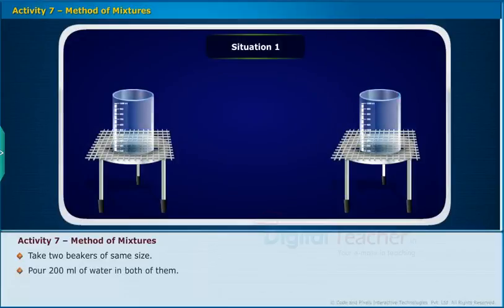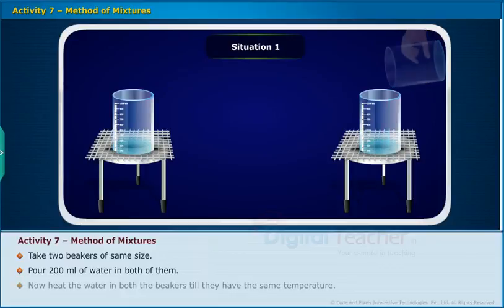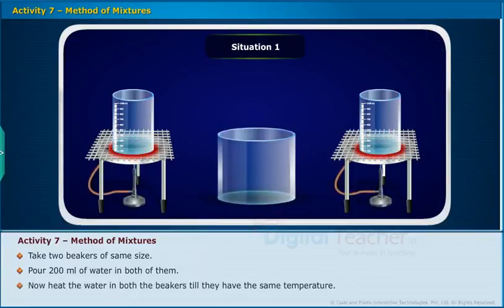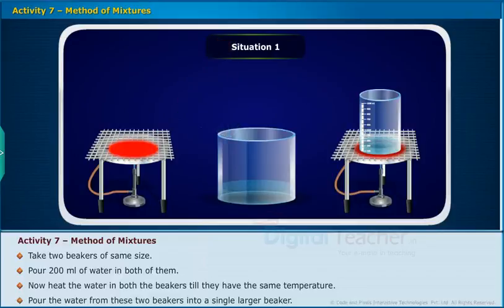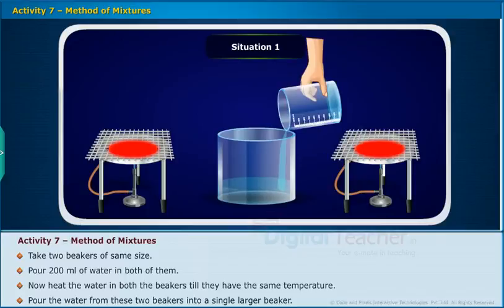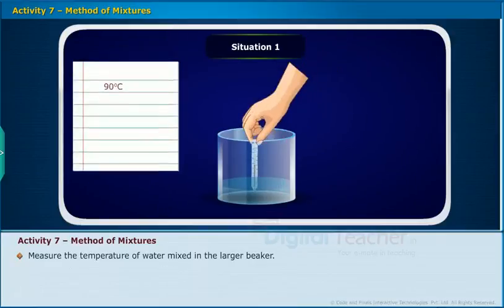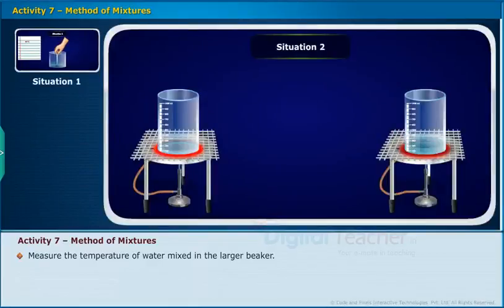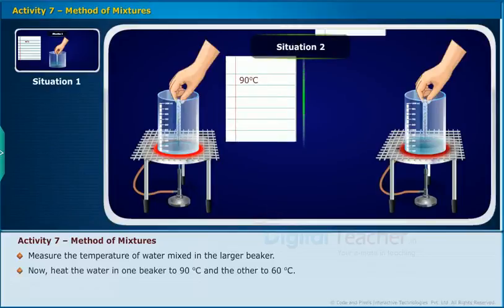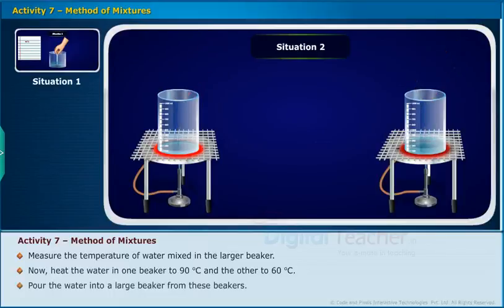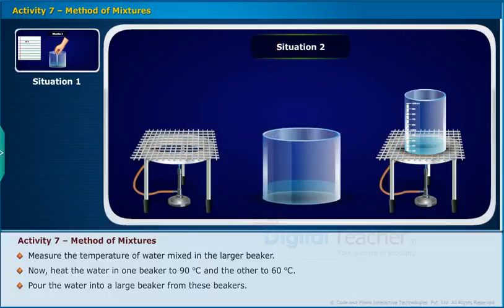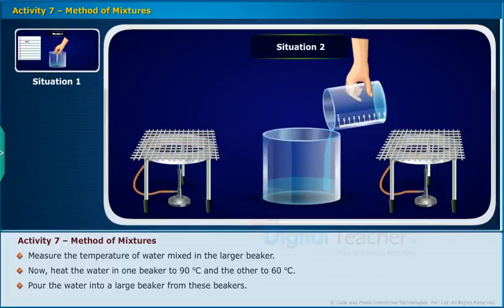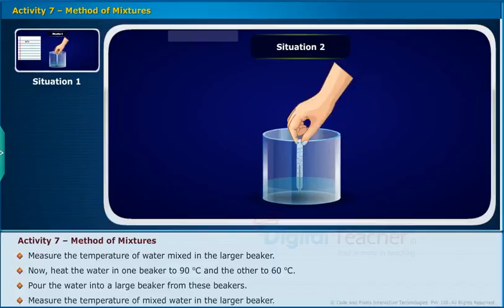Let us perform an activity for the method of mixtures. Situation 1: Take two beakers of the same size and pour 200 milliliters of water in both. Heat the water in both beakers until they have the same temperature, then pour the water from both beakers into a single larger beaker and measure the temperature. Situation 2: Heat water in one beaker to 90 degrees Celsius and the other to 60 degrees Celsius, pour them into a large beaker and measure the temperature of the mixed water. Situation 3: Take 100 milliliters of water in one beaker heated to 90 degrees Celsius and 200 milliliters of water in another heated to 60 degrees Celsius, mix them in a large beaker and measure the temperature.